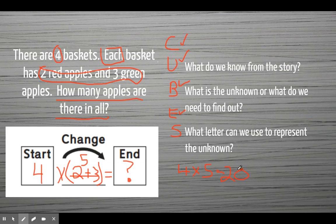Thinking about the two steps: first, I had to know how many apples were in each basket — in order to find that, I added two plus three. The second step was finding out how many apples are in four baskets, so I did four times five.